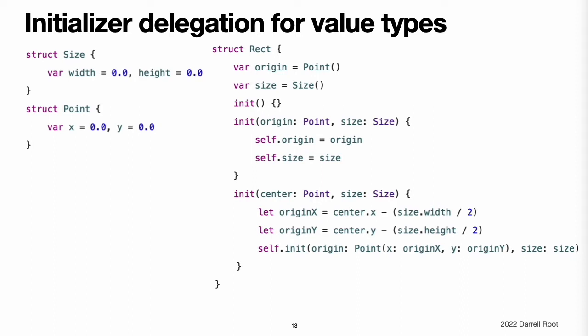Note: if you want your custom value type to be initializable with the default initializer and memberwise initializer and also with your own custom initializers, write your custom initializers in an extension rather than as part of the value type's original implementation. For more information, see Extensions.